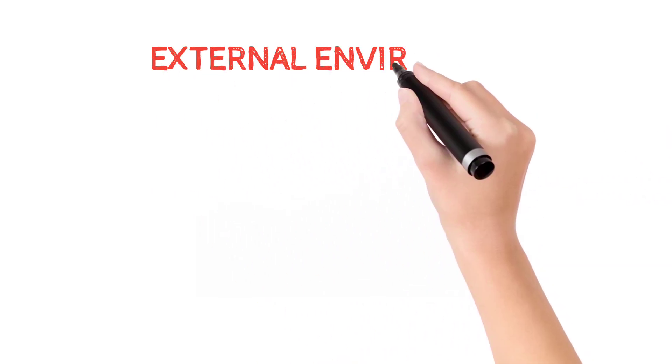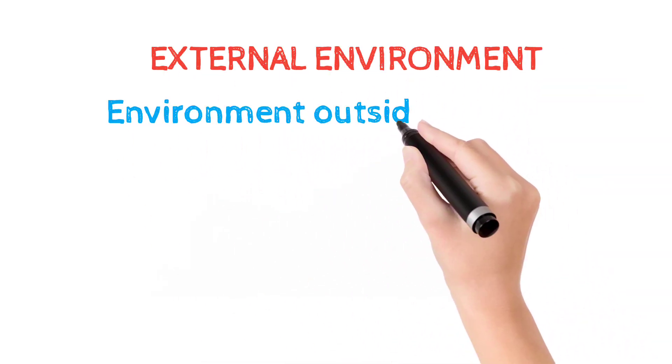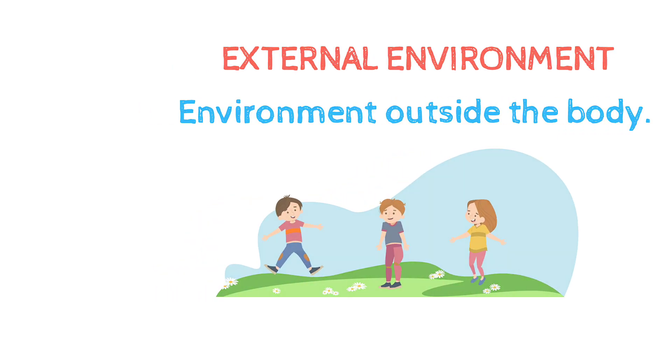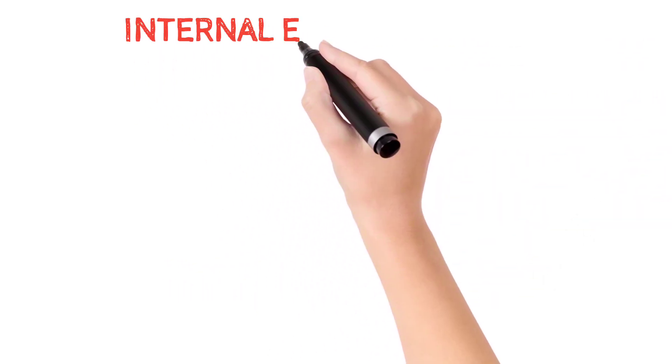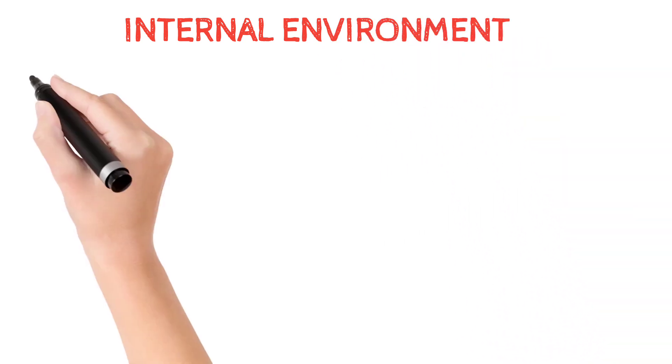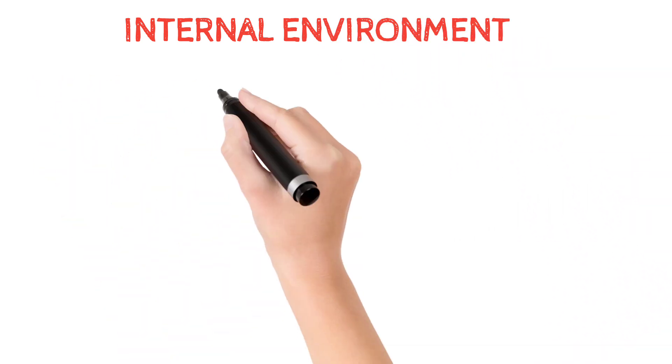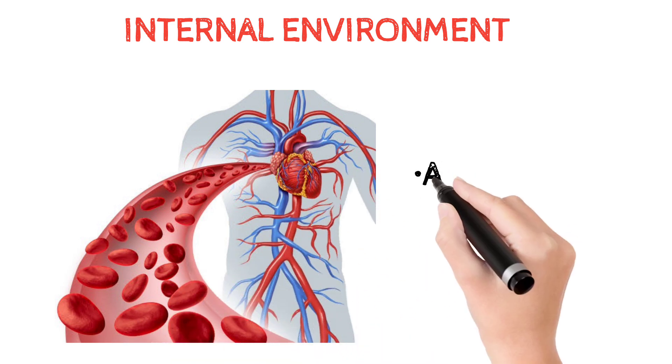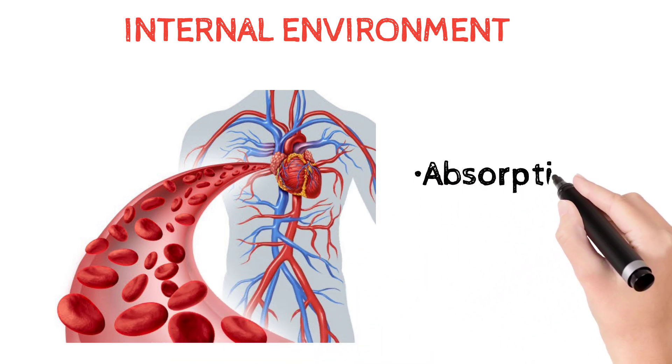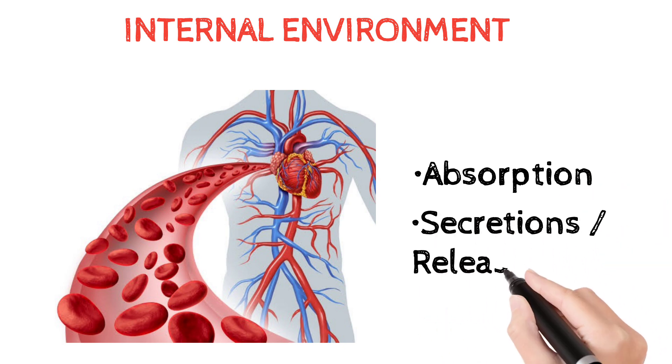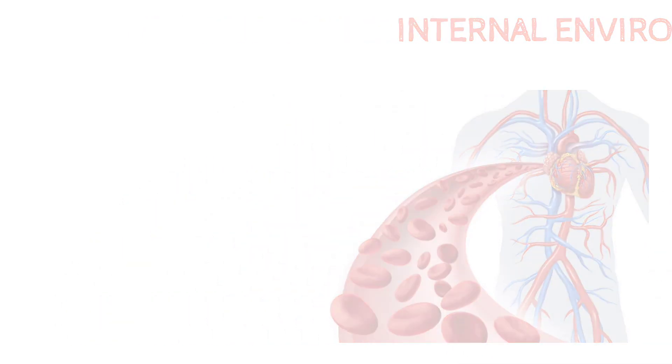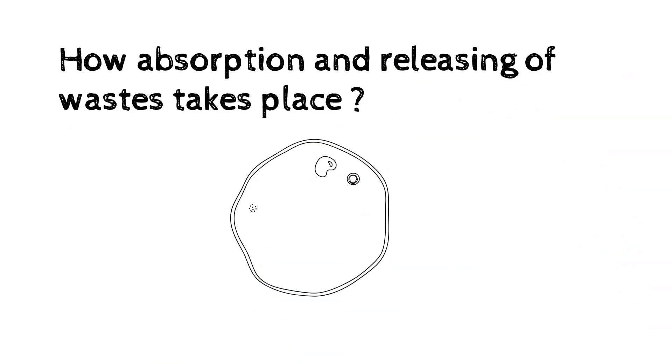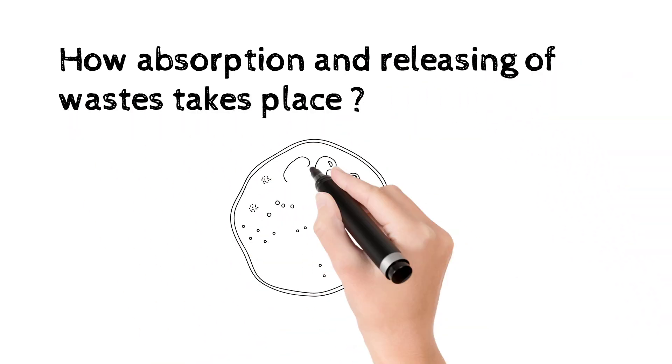External environment is around the body. What is internal? Internal environment is within the whole body. Through fluid, we have absorption and release of waste. How does absorption and releasing of waste happen? Because cells are inside the fluid.